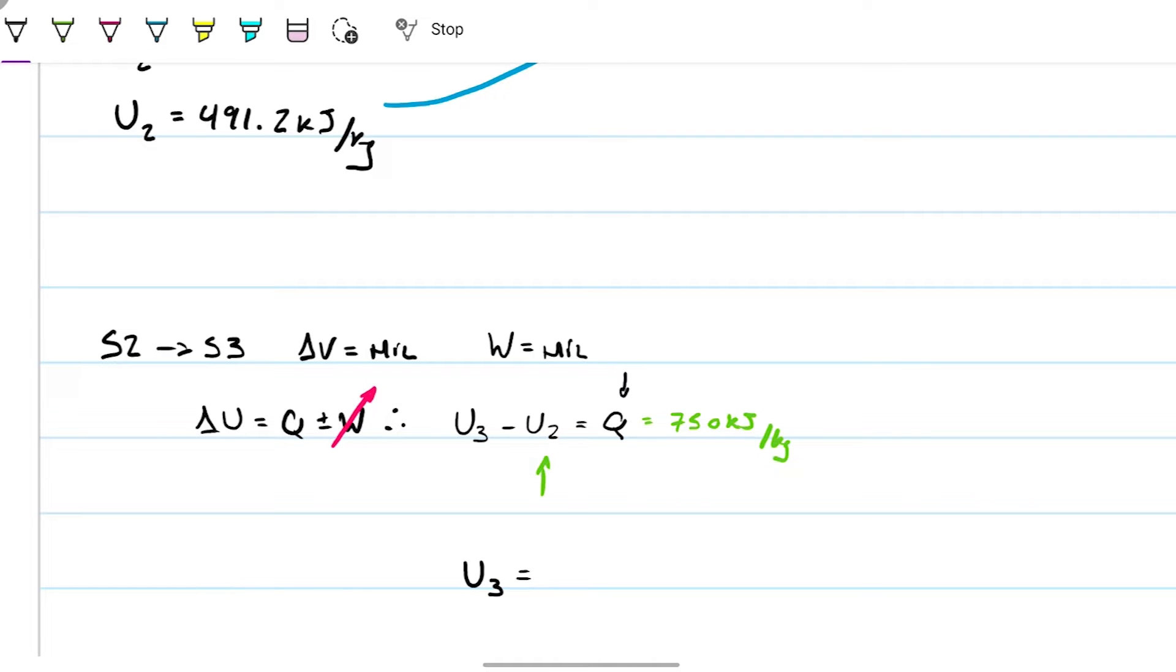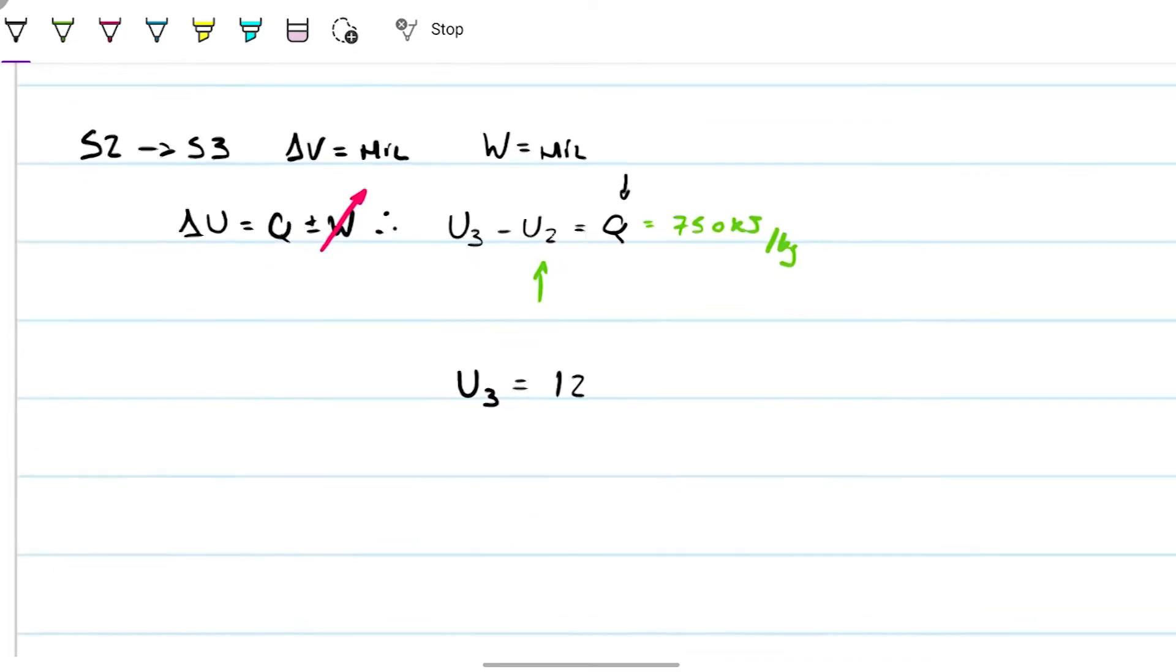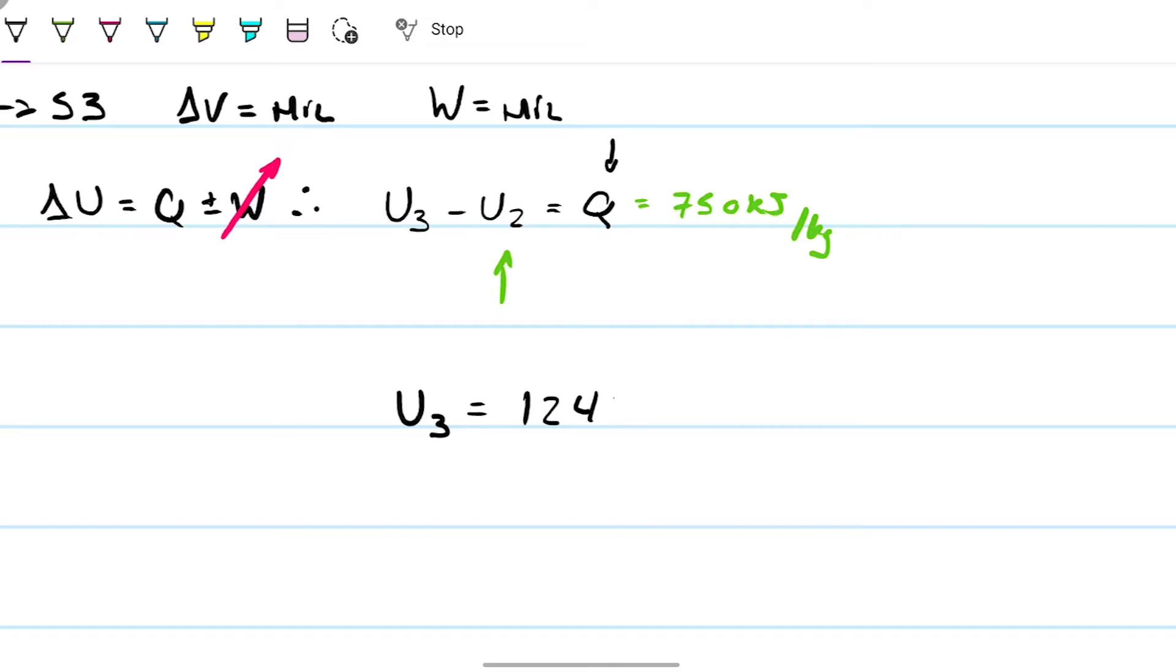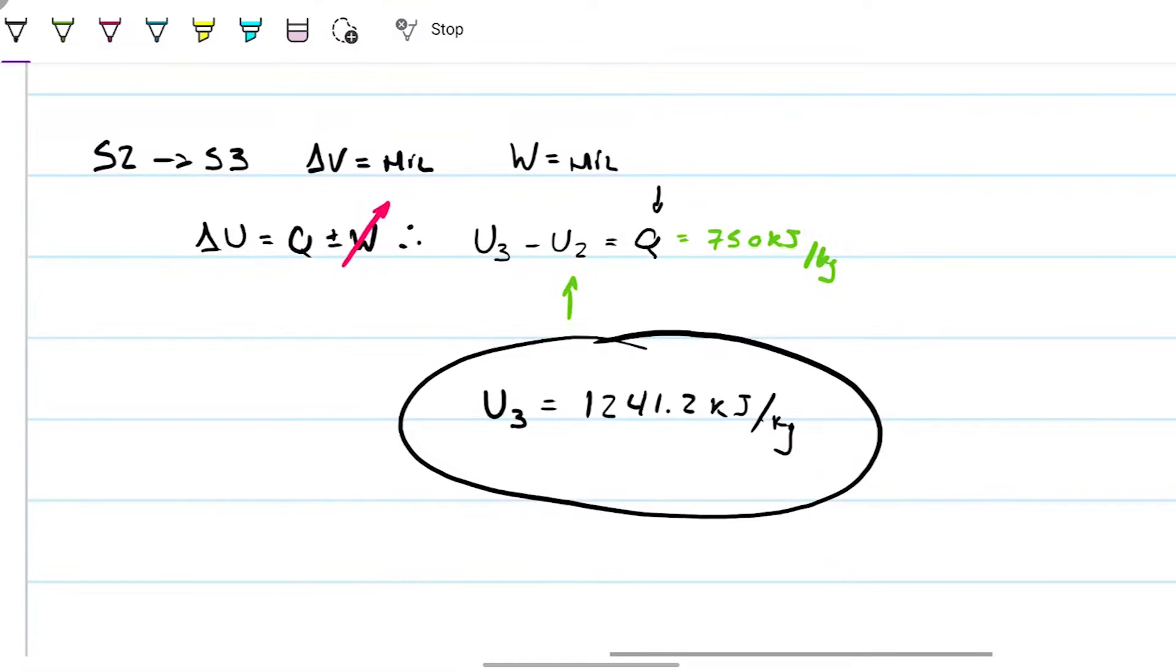So U₃ will simply be U₂ plus the 750 because we're giving that extra energy. So if that's the case, we just need to sum those guys up and we find that our U₃ is 1241.2. That's our first data point for state 3.